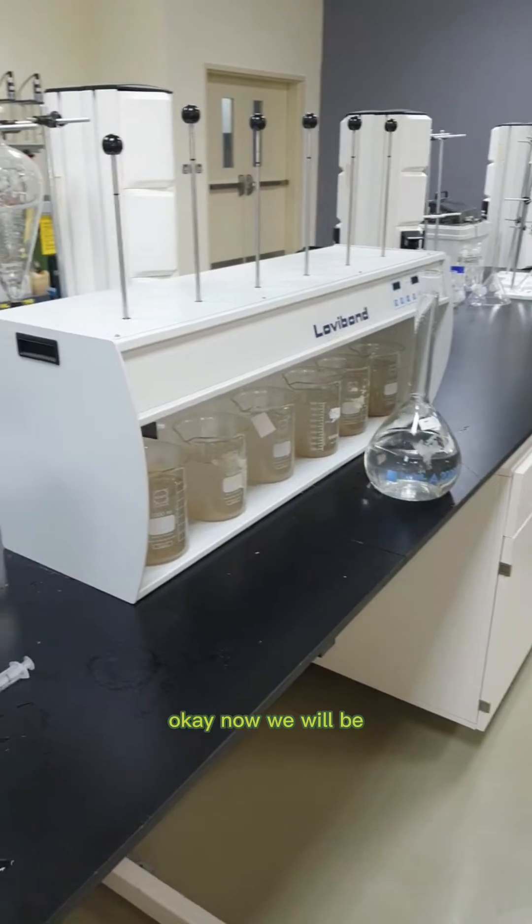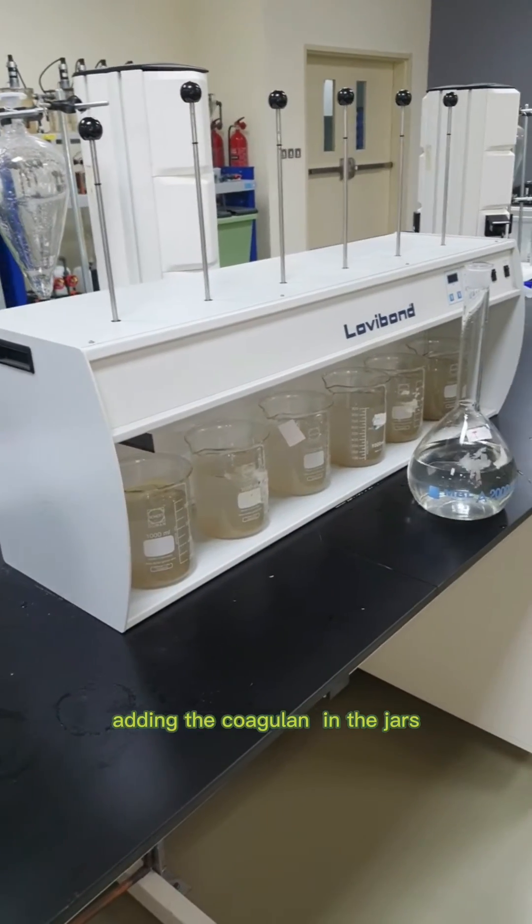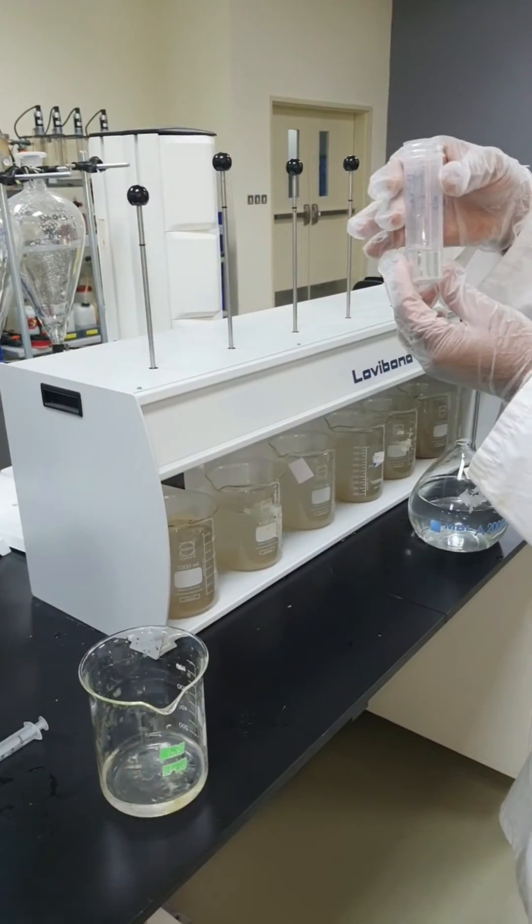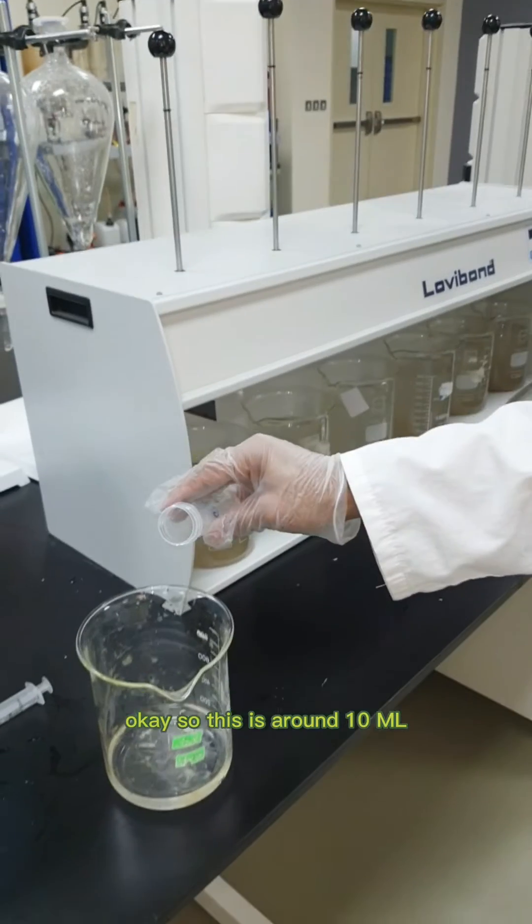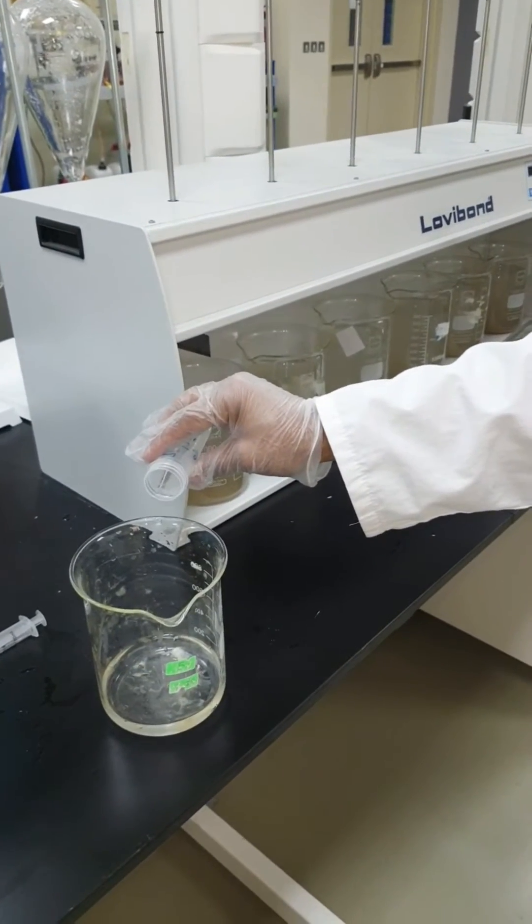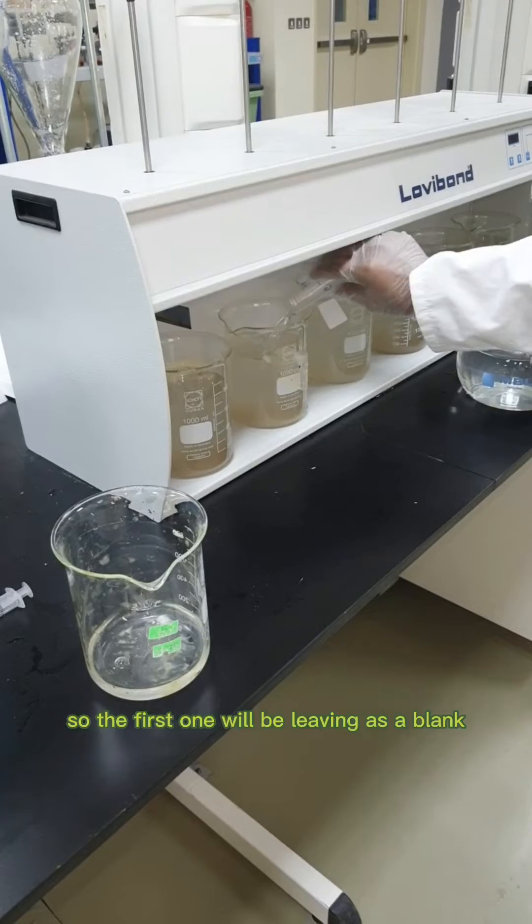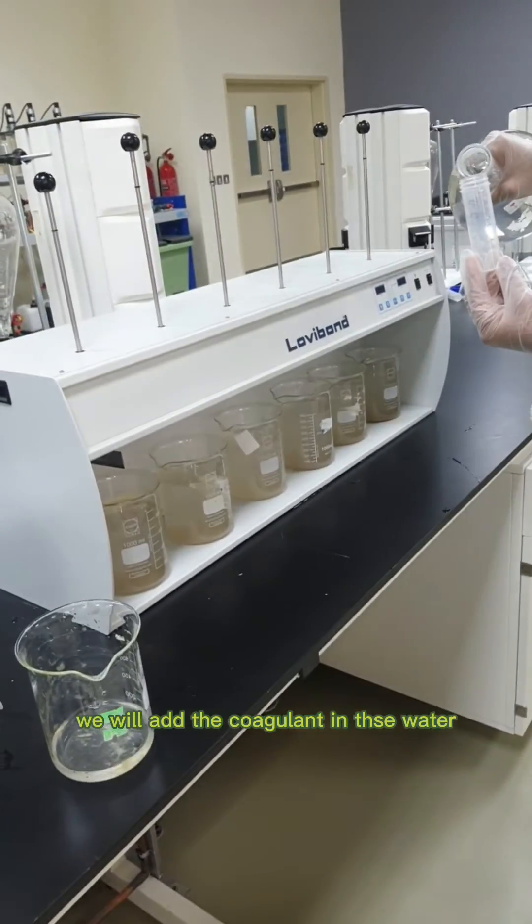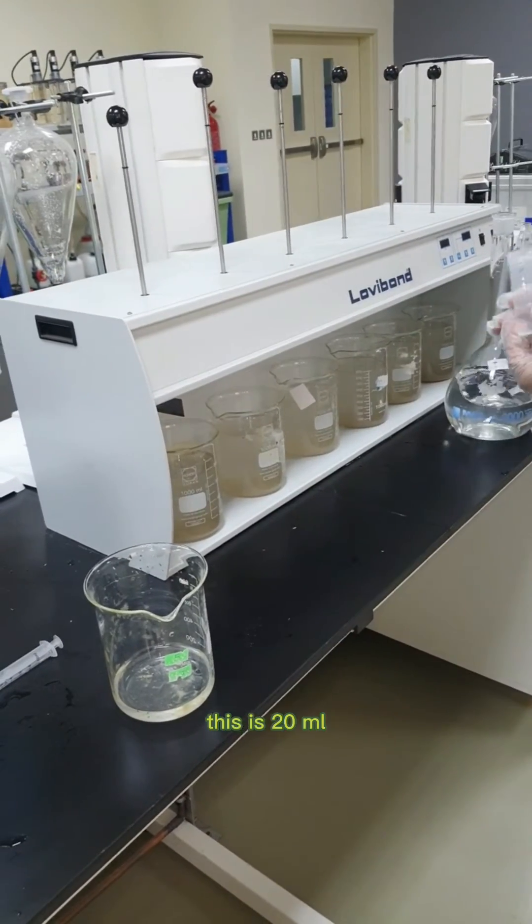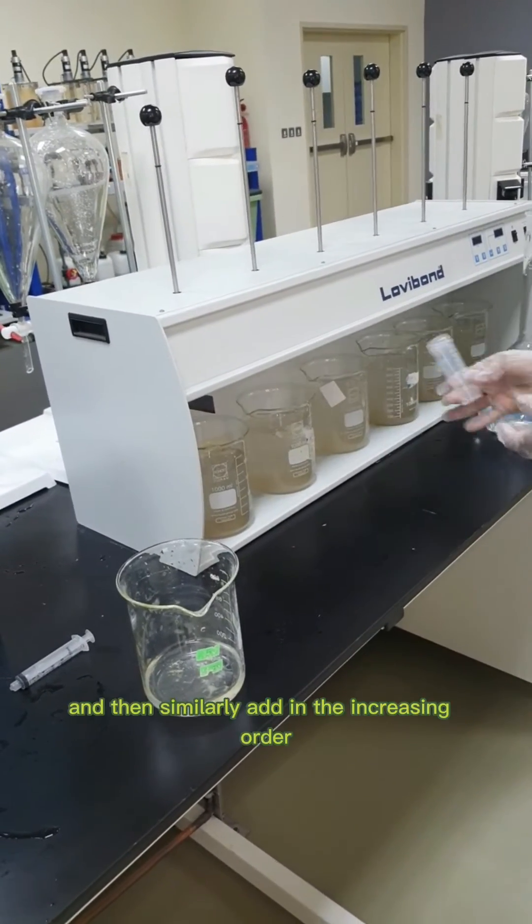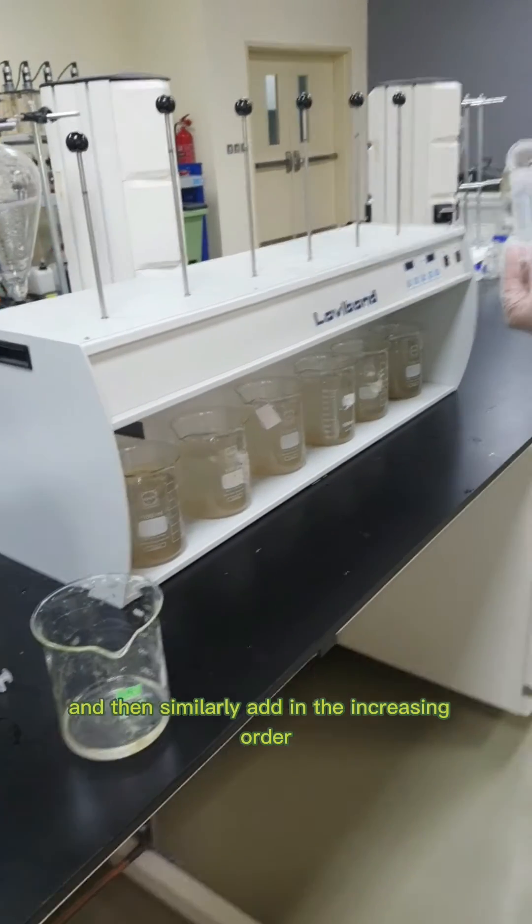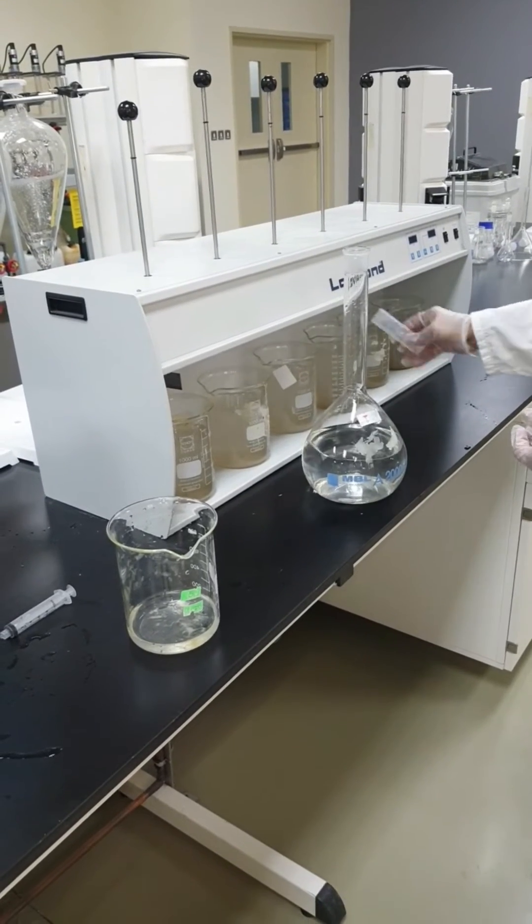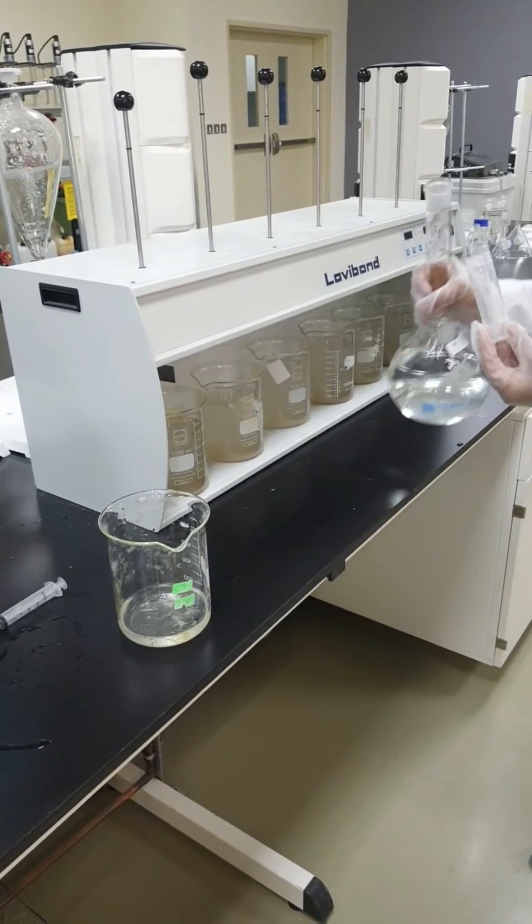Now we will add the coagulants to the jars in succession. This is around 10 ml. The first one we will leave as a blank, and then we add the coagulant to each: this is 20 ml, then 30 ml, and this is 40 ml.